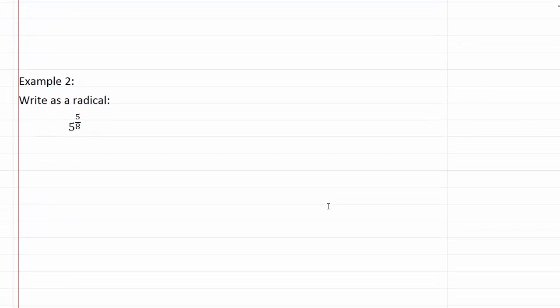So then looking at example two, this one says write as a radical. So this one is talking about actually going back from having a fractional exponent into having a radical.